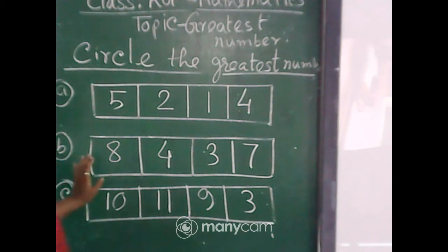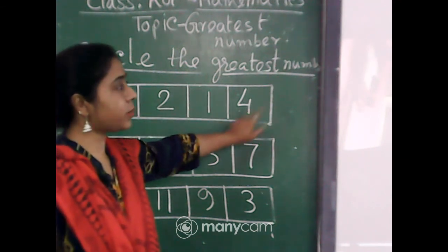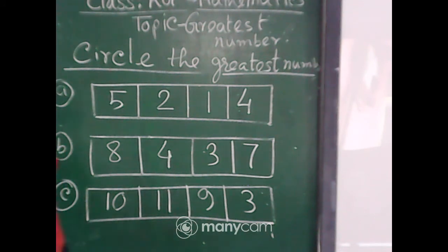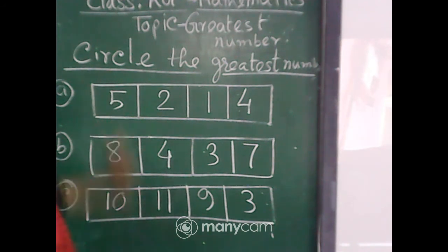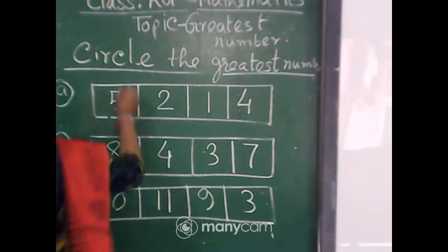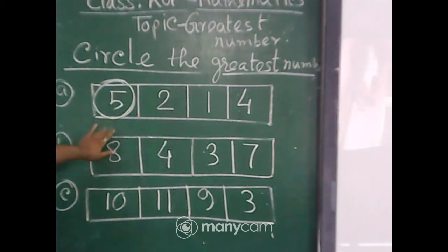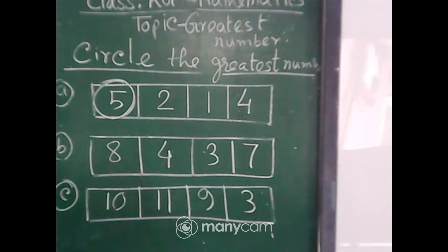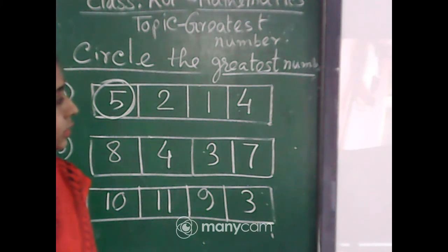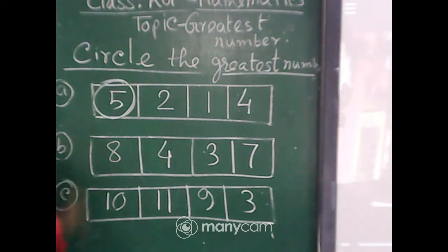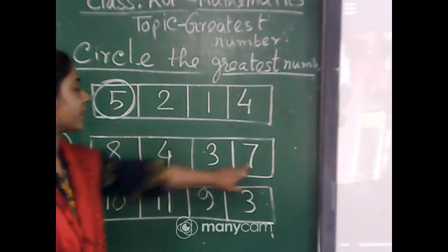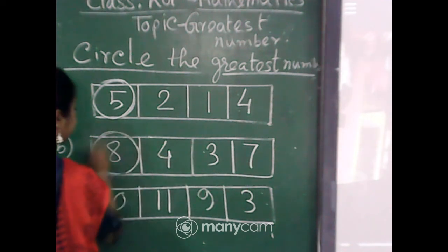Now we are doing the answers. Number A: 5, 2, 1, and 4. Write the answer in the chat box. The correct answer is 5, because 5 is the greatest number — circle on it. Very good. Number B: 8, 4, 3, and 7. What is the greatest number? Counting: 3, 4, 5, 6, 7, 8 — 8 is the greatest number. Very good!